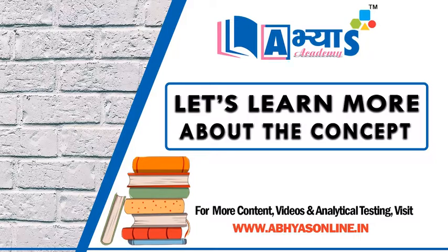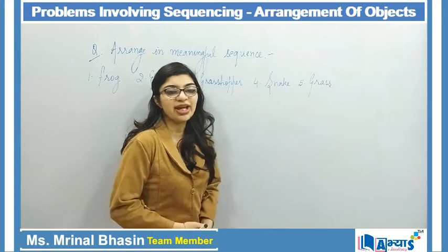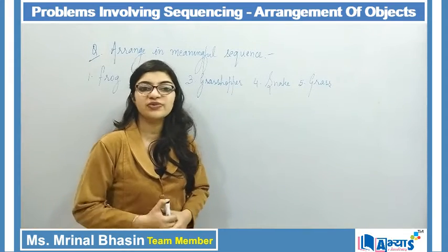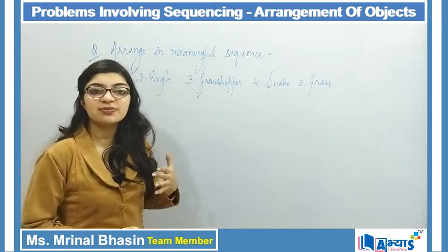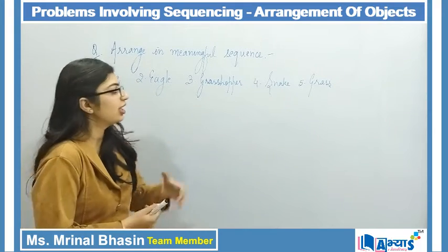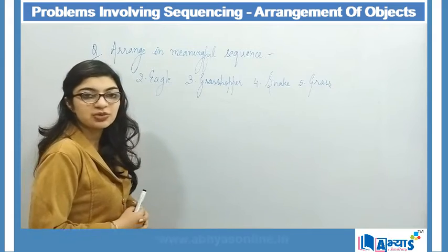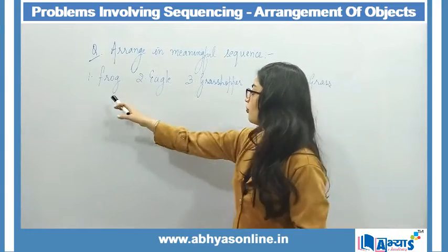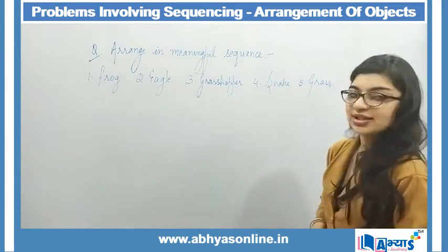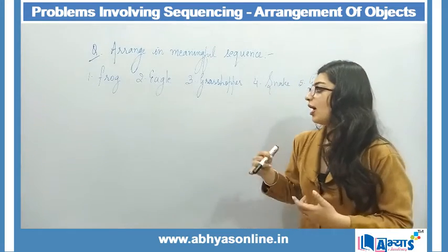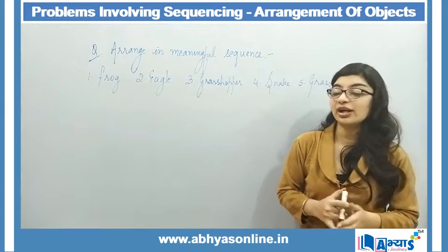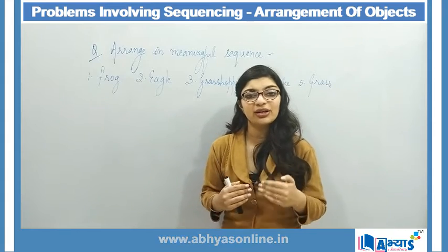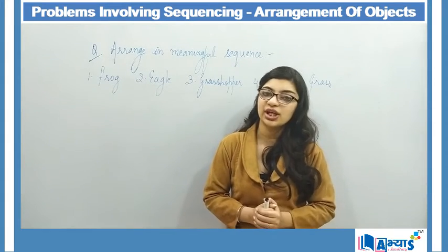Let's take a look at the next question. Again we have five words or five objects given, but they are not in a proper sequence — the sequence is in jumbled form. We need to arrange them in a meaningful sequence. The five words given are: frog, eagle, grasshopper, snake, and grass. Using common sense, we know these are somewhat interrelated — they will form a food chain.